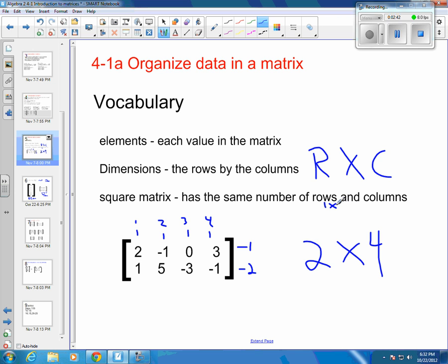Let's go back up here. So square matrix can be 1 by 1. They could be 2 by 2. They could be, oops, 2 by 2. They could be 3 by 3, 4 by 4, 5 by 5. You get the picture. Okay, so elements, dimensions, square matrix.